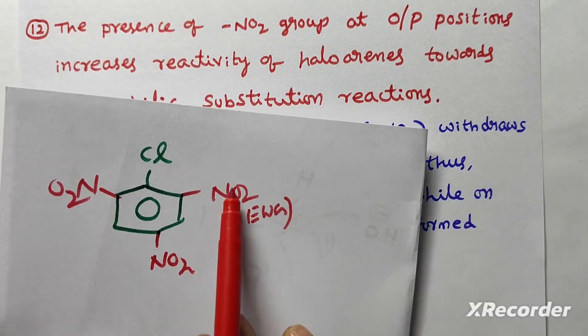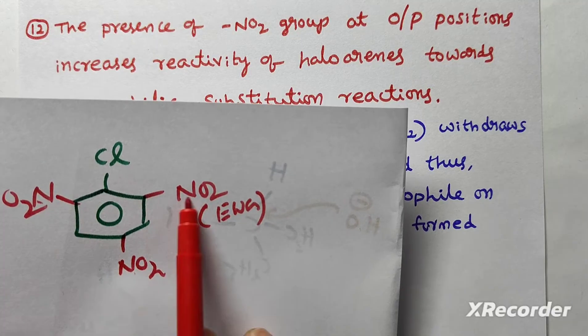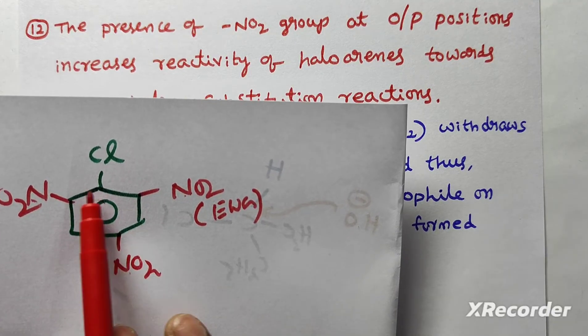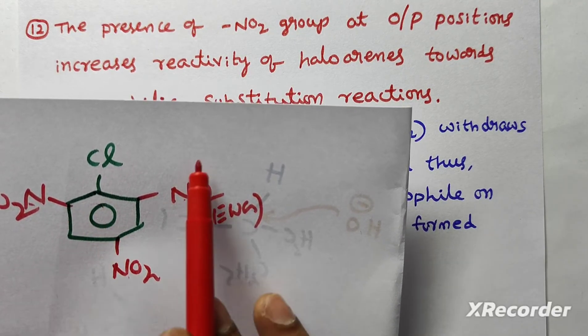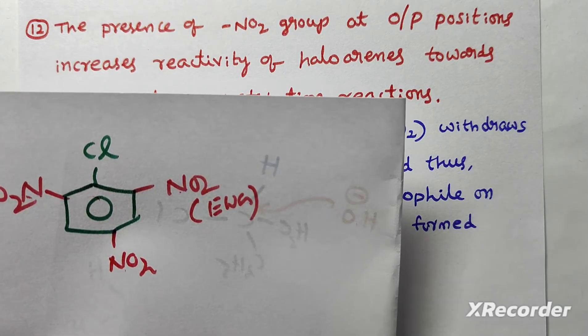Look at this. This NO2 group, what it will do is, it withdraws the electrons. So electron density in the benzene ring decreases. So nucleophile can easily attack on the benzene ring.